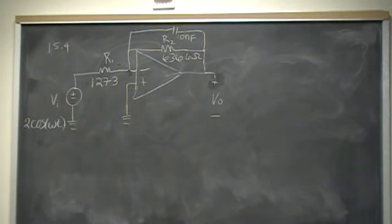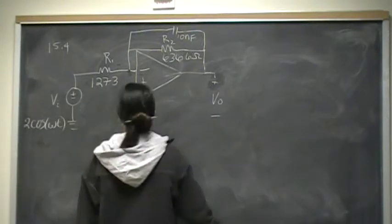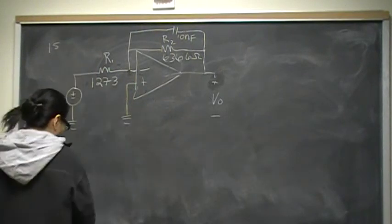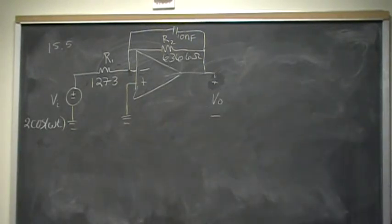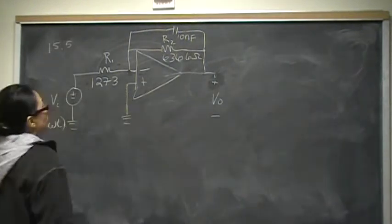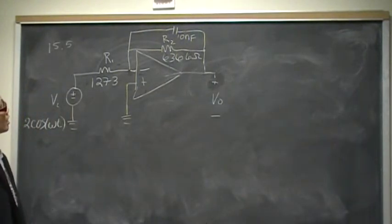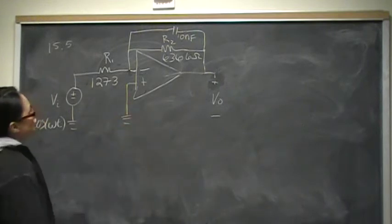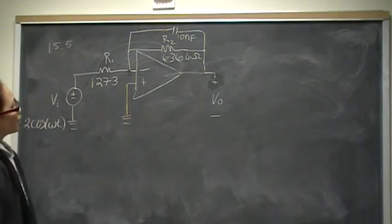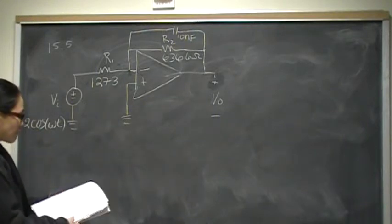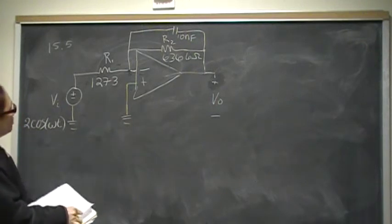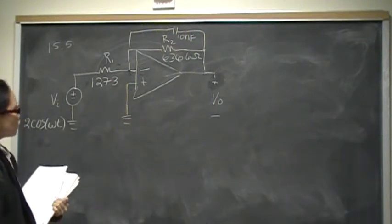Hey guys, so this is problem 5 from chapter 15, and it continues from problem 4, where we design a bandpass filter with a gain of 5. What we found was that if we want a gain of 5 and we want to use a 10 nanofarad capacitor in our design, the feedback resistor would be 6,366 ohms, and our R1 would be 1,273 ohms.